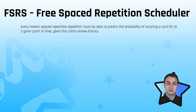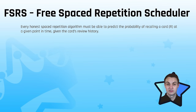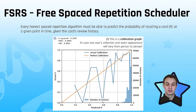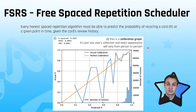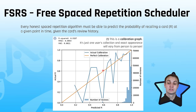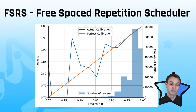A spaced repetition algorithm needs to predict the probability of recalling a card at a certain time given its review history. Here's a graph: on the x-axis is predicted retrievability, on the y-axis is actual retrievability. The perfect algorithm is the orange line — if it predicts 60% you get it right 60% of the time. FSRS is very close to that line, and zooming into the high-retention range it's really accurate. We'll use the RMSE — the deviation of the blue line from the orange line — to compare FSRS to SuperMemo 2.